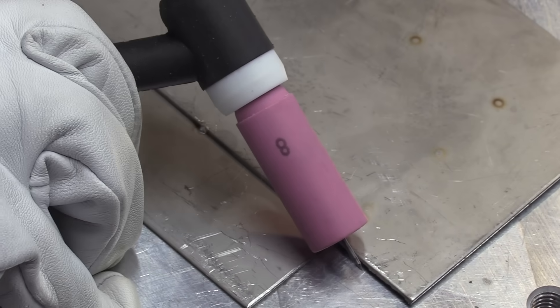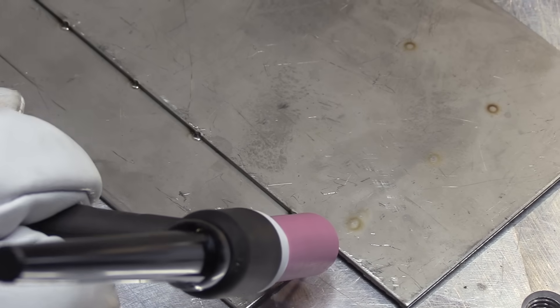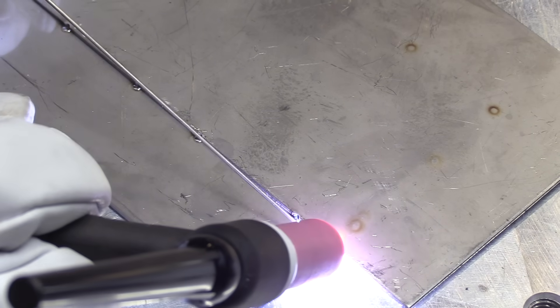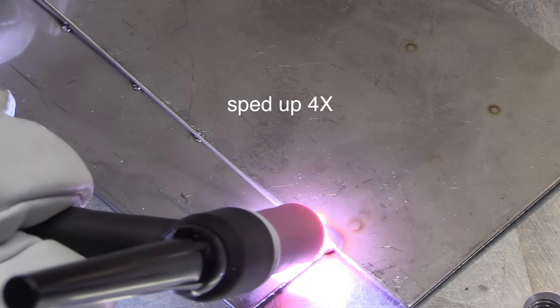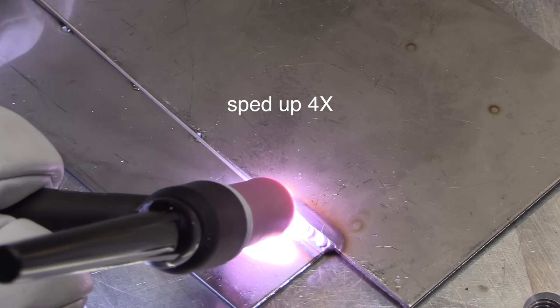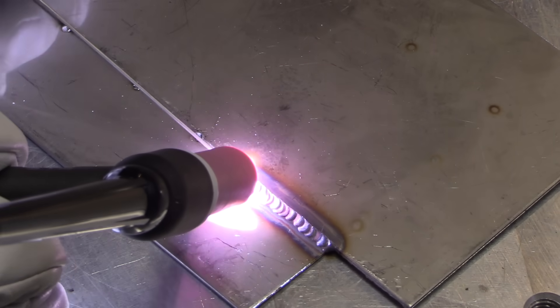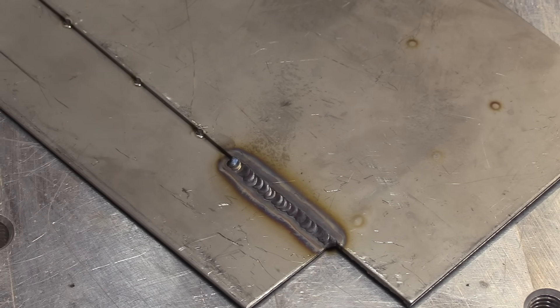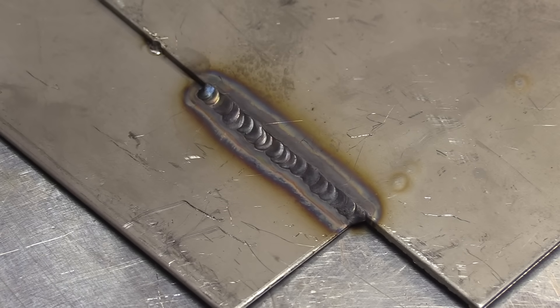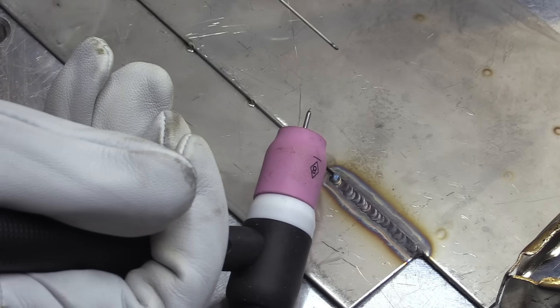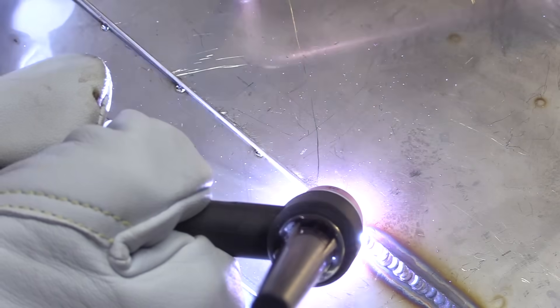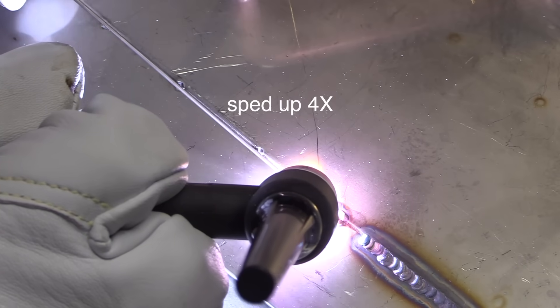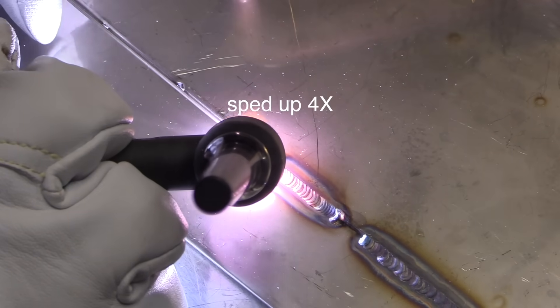This is a standard number 8 cup, standard collet body that comes with most air-cooled 17 style torches, the most common torch out there that comes with say a 200 amp machine. This is sped up four times, but I'm just showing you with a 7/16 stick out at 20 CFH results are less than perfect. It's gray, the puddle swam around on me, got oxidized.